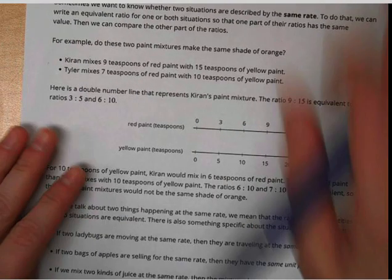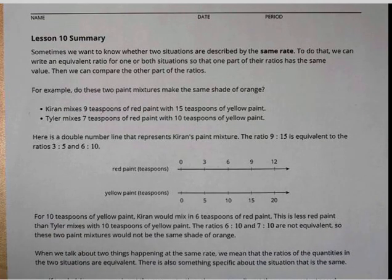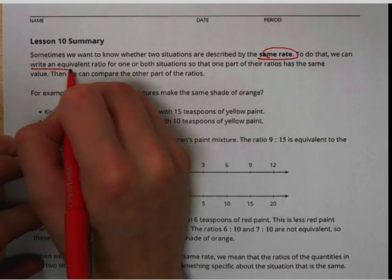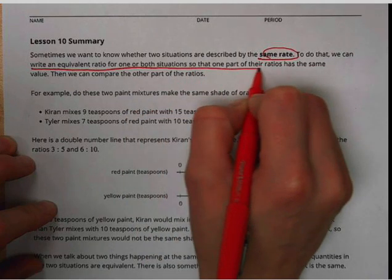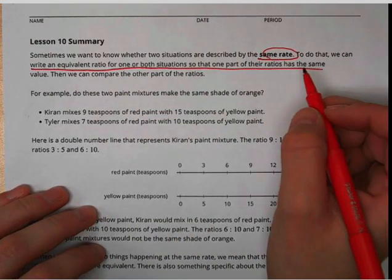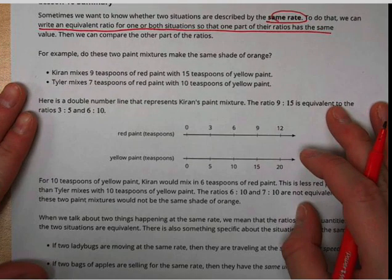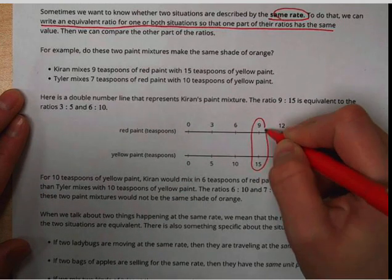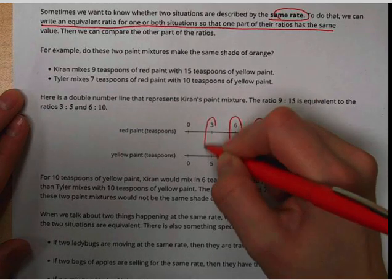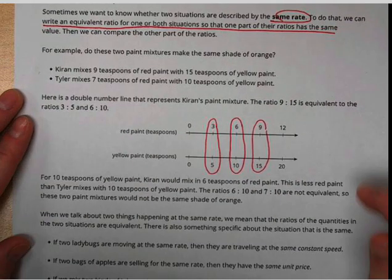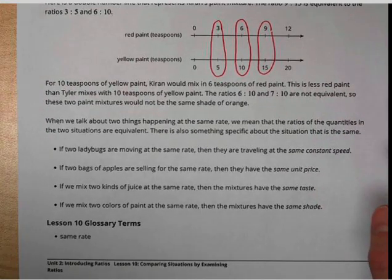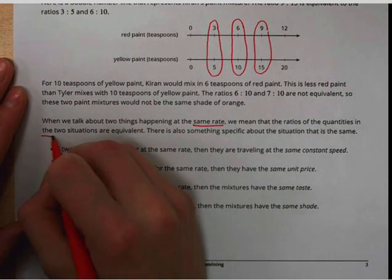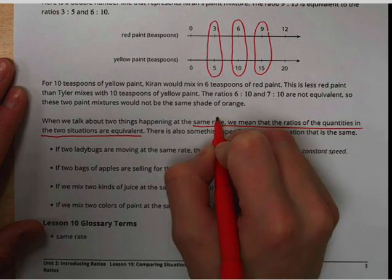For the lesson summary: if we see the words 'same rate,' it means that we can write an equivalent ratio for one or both of the situations. So same rate means equivalent ratio. And here's an example here of the ratio 9 to 15, 3 to 5, and 6 to 10, proving that these are all equivalent. They all have nice circles going up and down. When we talk about two things happening at the same rate, we mean that the ratios of the quantities in the two situations are equivalent. So same rate: equivalent.